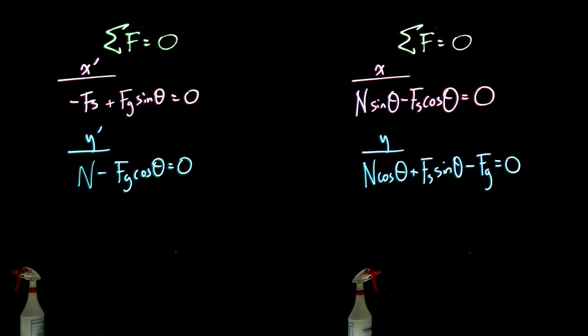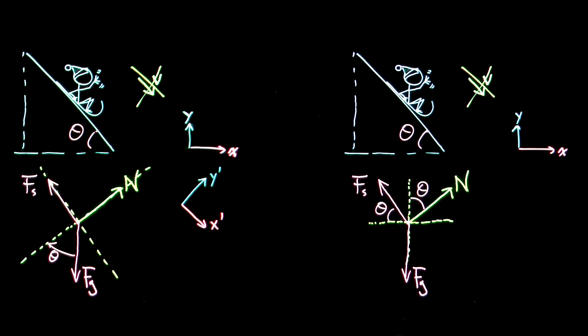Right, Newton's laws still hold. The sum of the forces in x are going to be zero, sum of the forces in y are going to be zero. And if you actually go through and solve both of these sets of equations in the two different orientation axes, you'll get the same numbers.